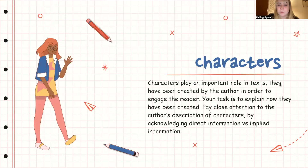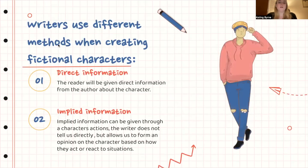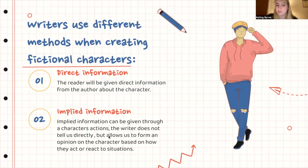Characters play an important role in texts — they've been created by the author to engage the reader. Your task is to explain how they've been created, paying close attention to direct information versus implied information. Writers use different methods when creating fictional characters. Direct information is where the author tells us something directly about a character, while implied information is given through a character's actions — the writer doesn't tell us directly but allows us to form an opinion based on how they act or react.